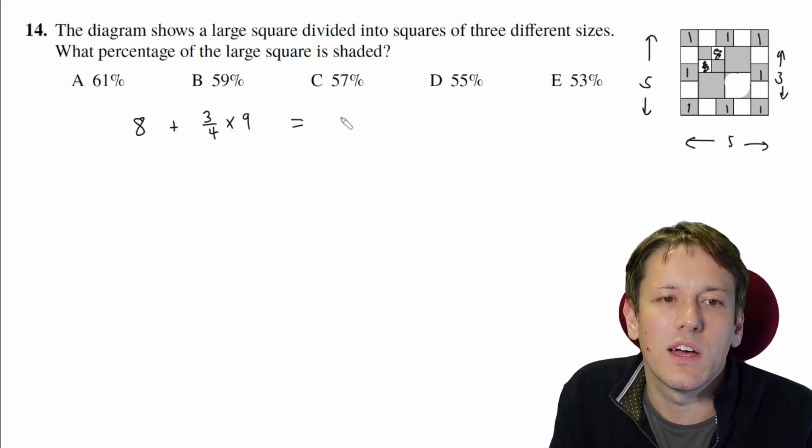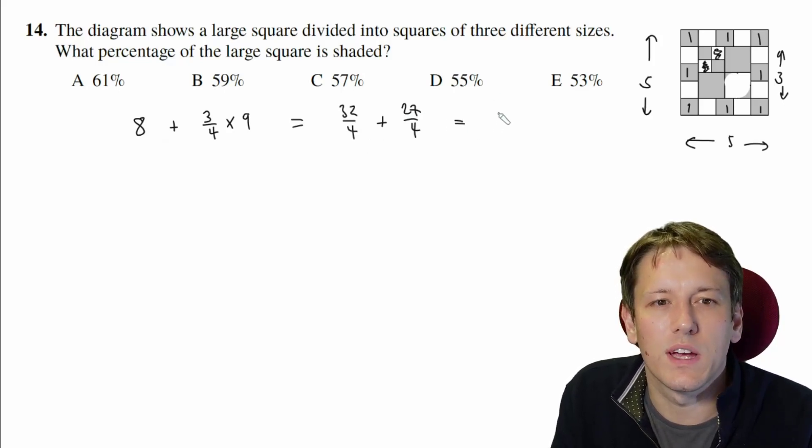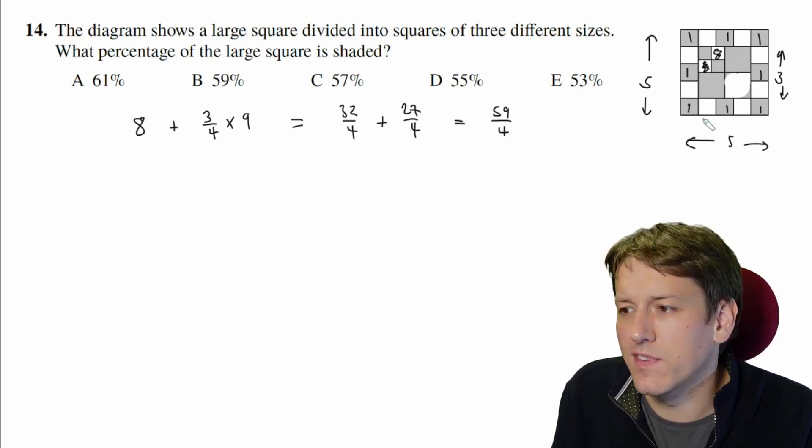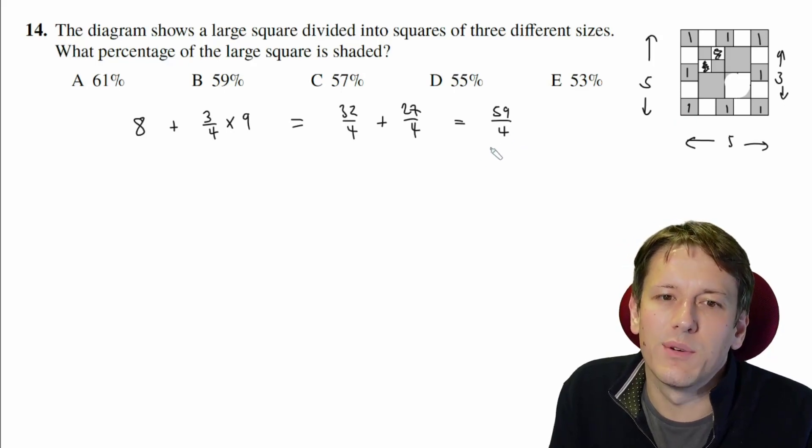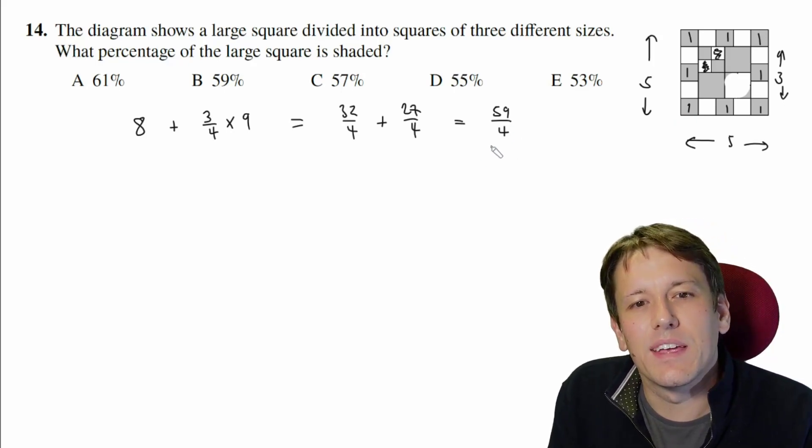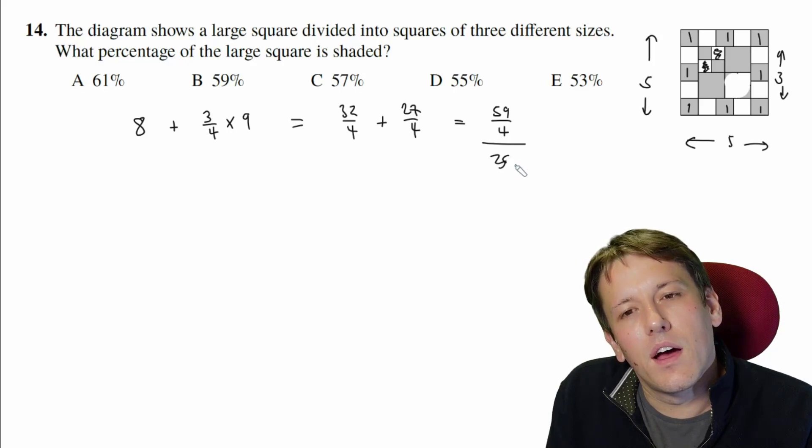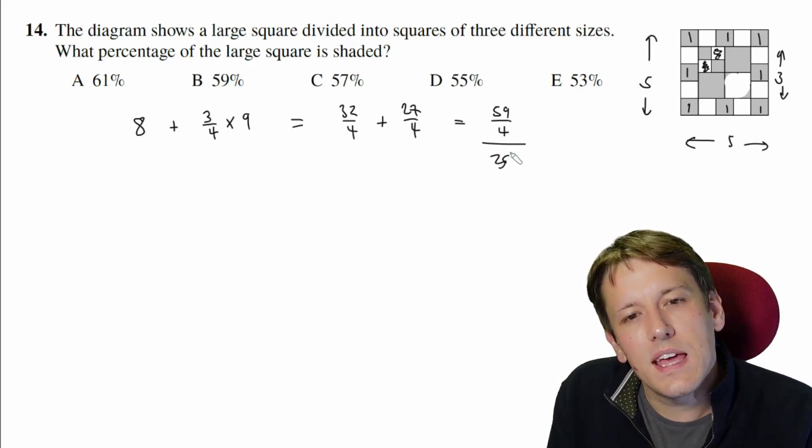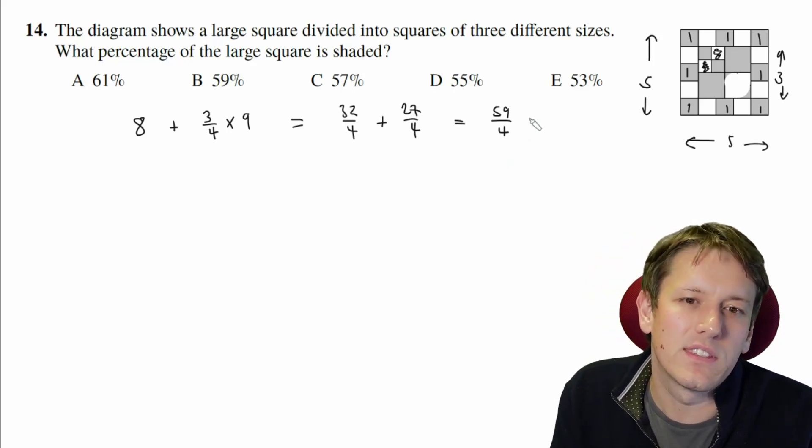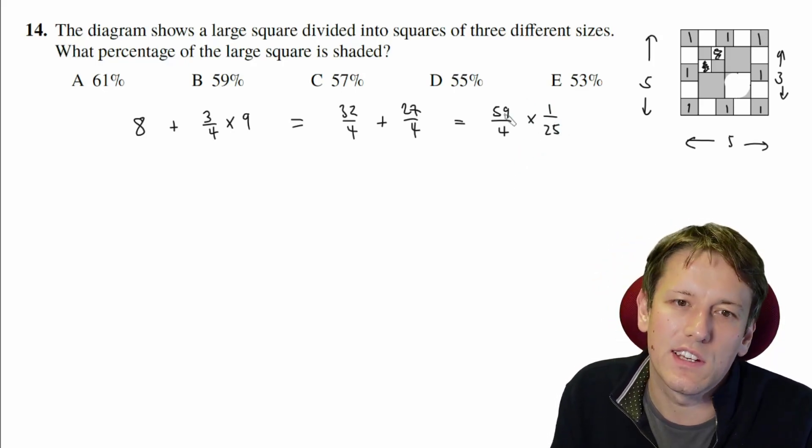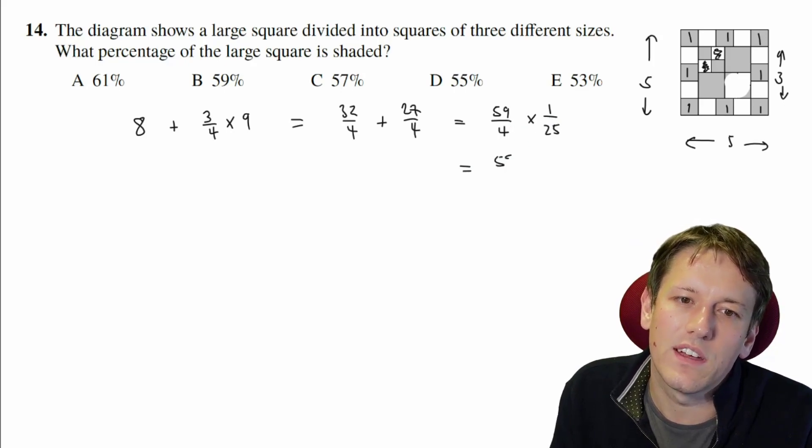So the number of squares we've got is eight plus three quarters times the three by three square, which is nine. So we've got eight plus 27 over four. So if I write eight as 32 over four, you can see that the number of squares shaded is going to be 59 over four. Now, this was a five by five square, so I want to divide this by 25. But what I could do instead, dividing by 25 is the same as multiplying it by one over 25. So perhaps it's not too hard to write it down like this, and then multiplying these together, I get 59 over 100. And so we can see that the percentage here is 59%.